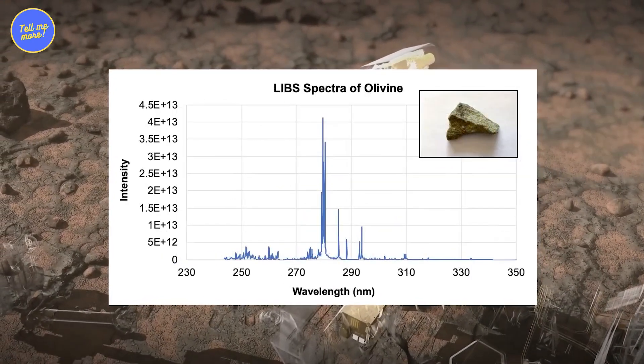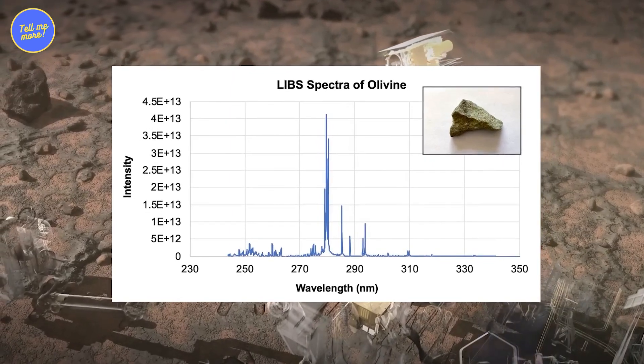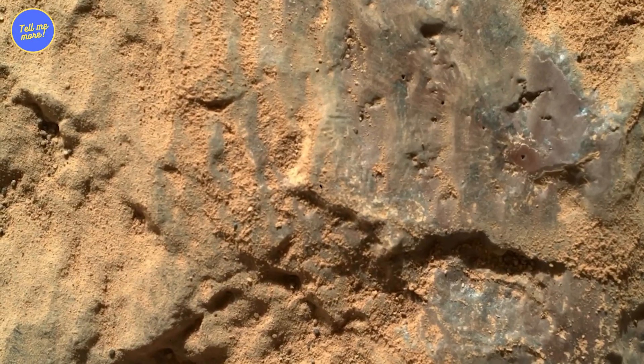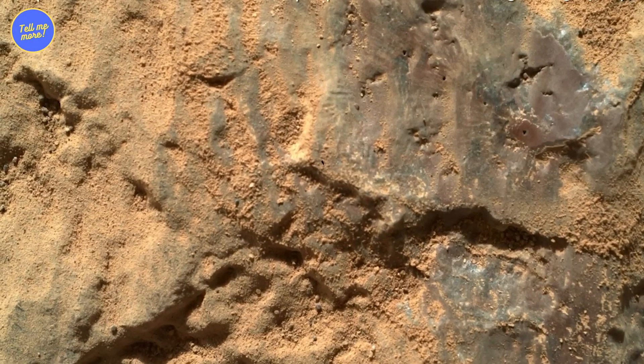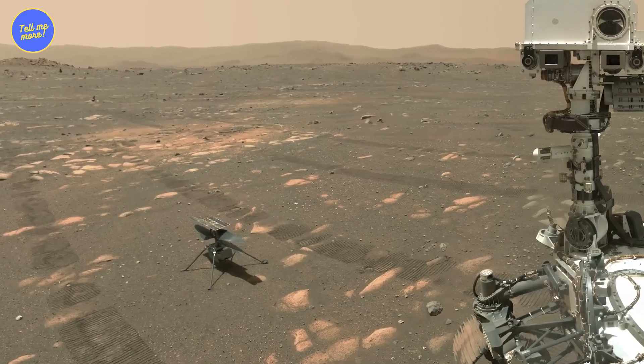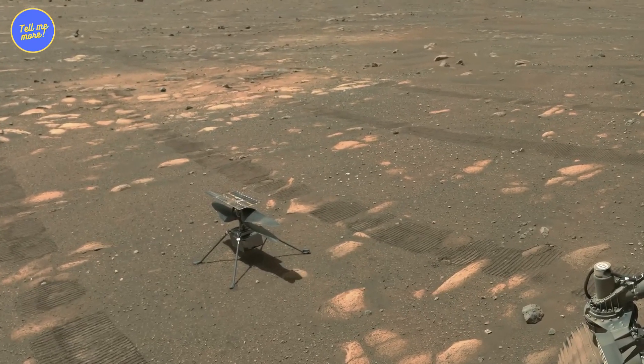This discovery shook things up. It meant that Mars, our red desert buddy, once had a watery past. It's like learning that your grumpy old neighbor used to be a surfer dude in his youth. Curiosity's findings opened up a whole new chapter in Martian history.